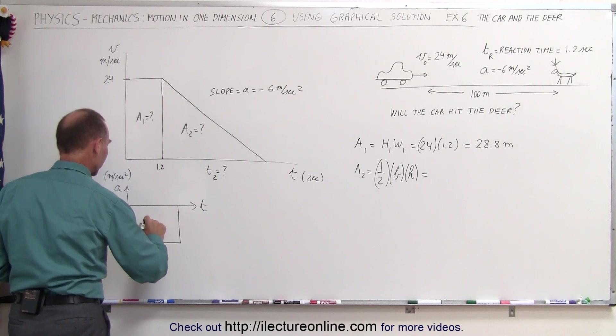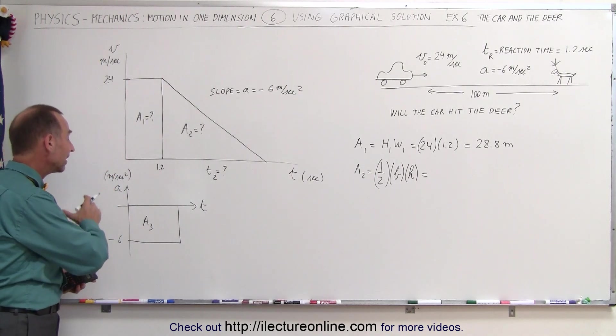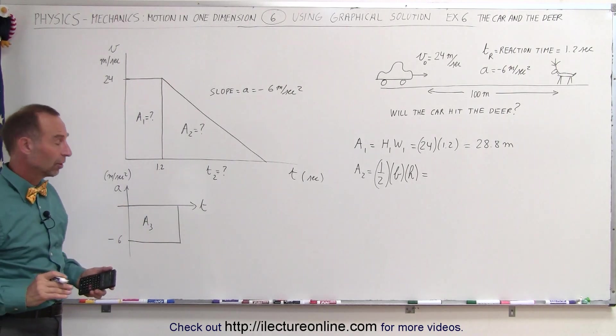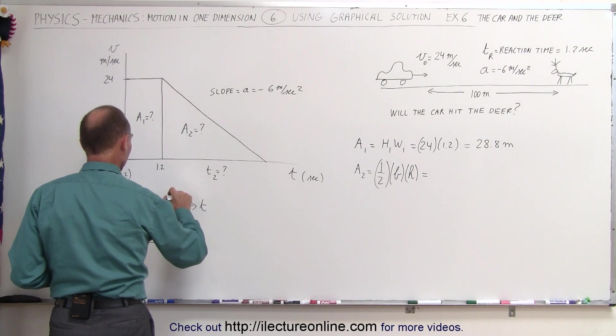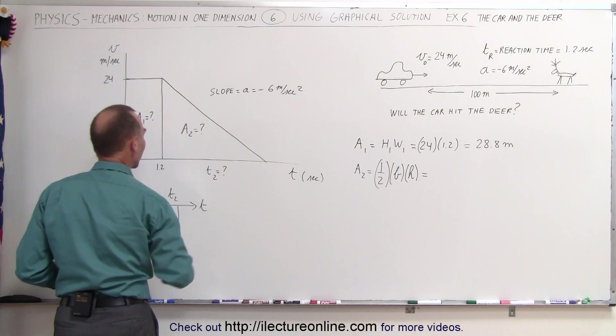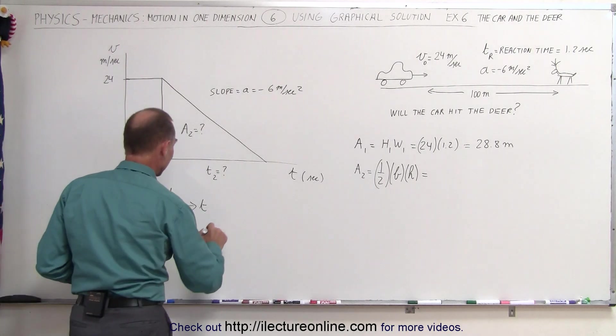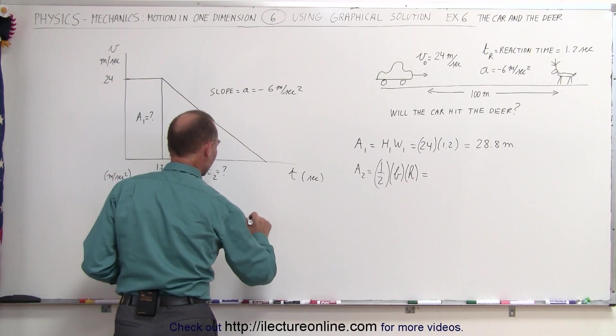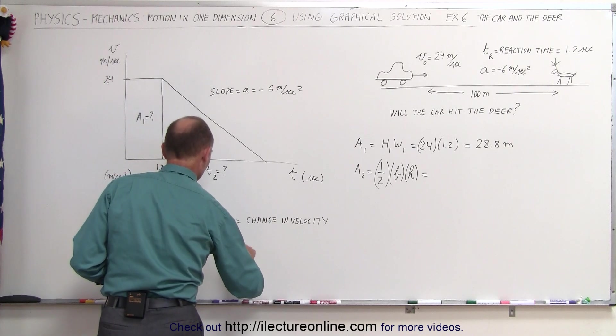Area 3 represents the velocity change from when the brakes were applied until the car stops. This time interval t2 is the same time we're looking for. We know that a3 is equal to the change in velocity.